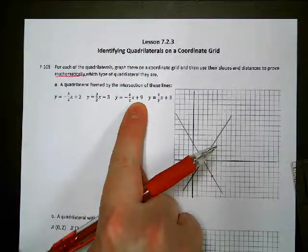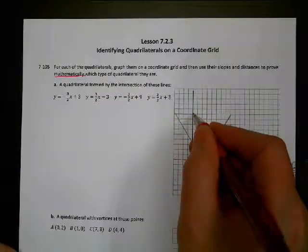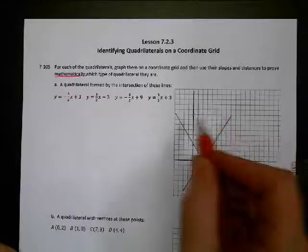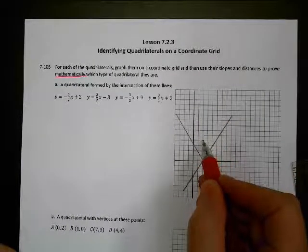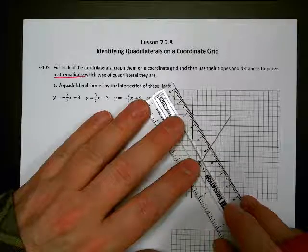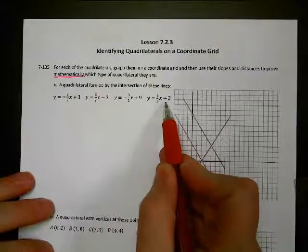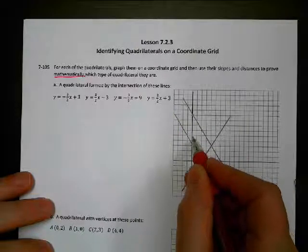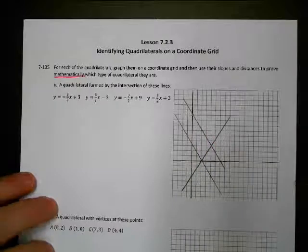Third one — y-intercept is nine. One, two, three, one, two, three — I think that's nine. Its slope is negative three over two, so we're going to go down one, two, three, over one, two, and then down one, two, three, over one, two. The next one has a y-intercept of three, and then we're going to go up three, one, two, three, and over two, and up one, two, three, over two.